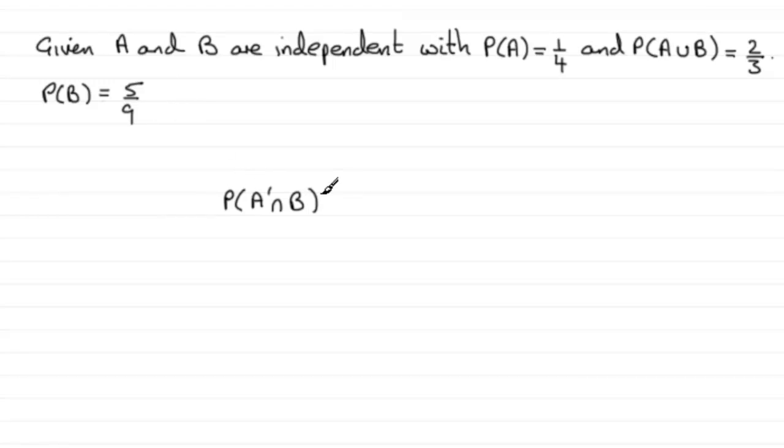And to do this question, we've got to remember that since A and B are independent, then not A and B will also be independent events. So that means that we can say that this is exactly the same as the probability of not A multiplied by the probability of B.